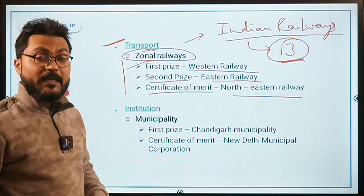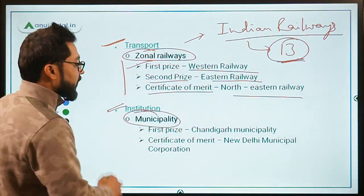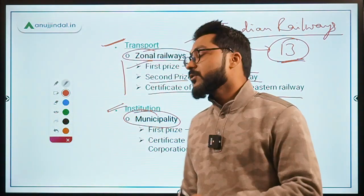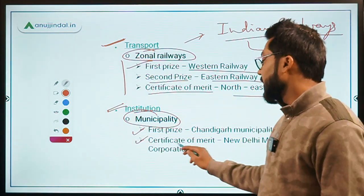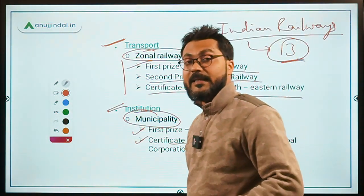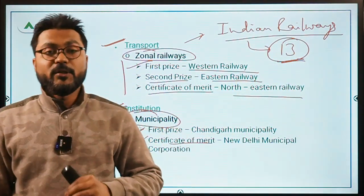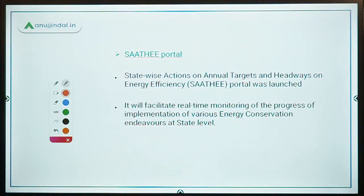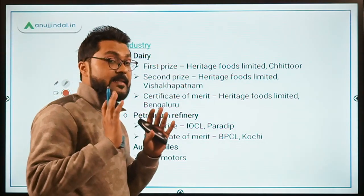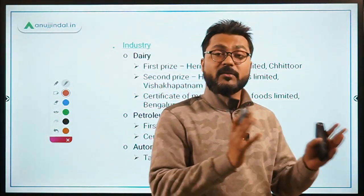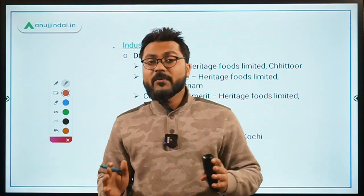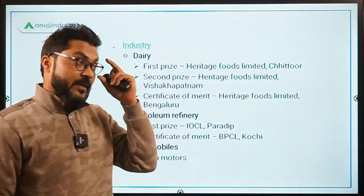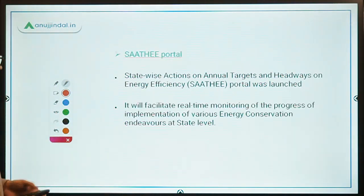In the institution category, under the municipality subcategory, Chandigarh Municipality received the first prize while the certificate of merit was given to NDMC — New Delhi Municipal Corporation. These are the important winners to remember. There are many other subcategories and winners that are not critical for the exam; focus on these subcategories and their respective winners.